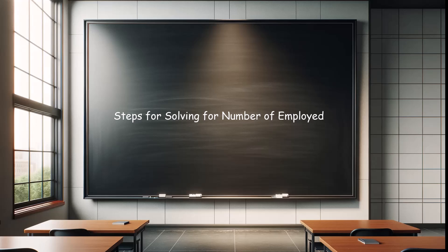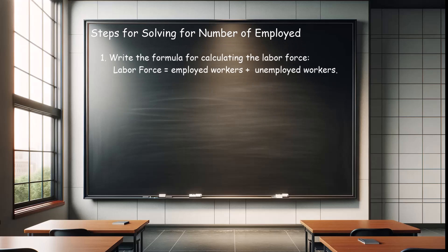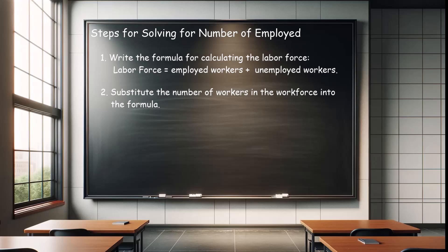Now let's look at how to calculate the number of employed workers given the labor force and the number of unemployed workers. Step one: write the formula. The labor force equals the number of employed workers plus the number of unemployed workers. Step two: from the problem statement, substitute the number of workers in the workforce into the formula. Step three: substitute the number of unemployed workers into the formula.